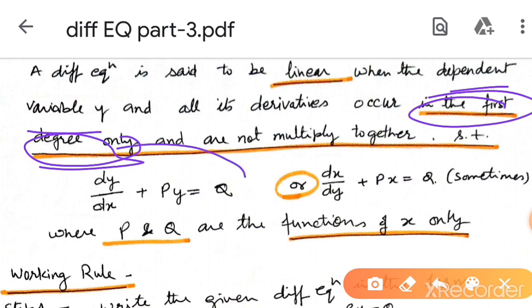The standard linear form is dy by dx plus p y equal to q. We can write it in this way.